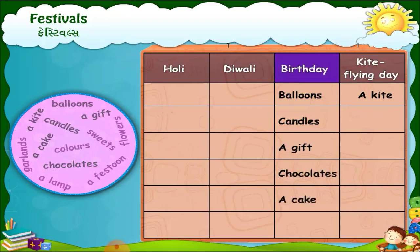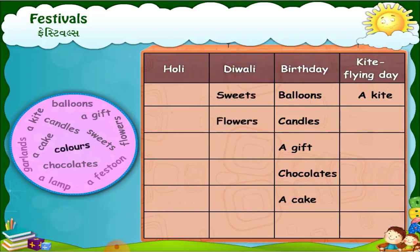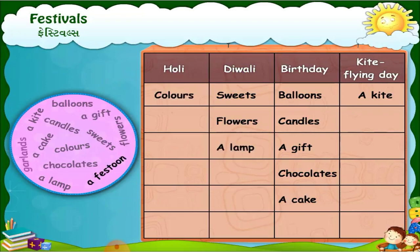Sweets are prepared on Diwali. Flowers are used in Diwali. Colors are used in Holi. A lamp is used in Diwali. A festoon is used in Diwali.